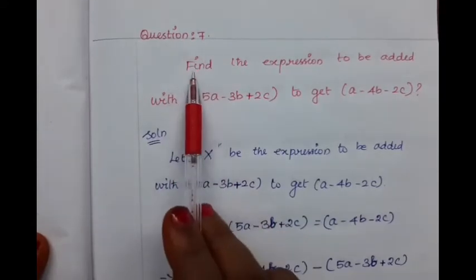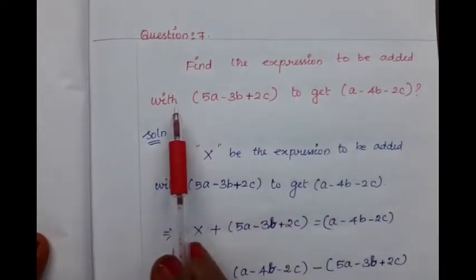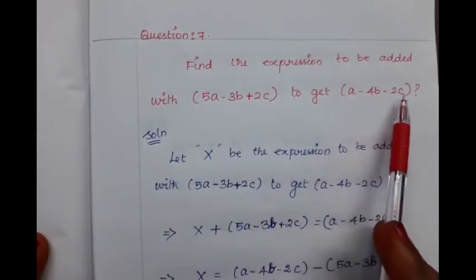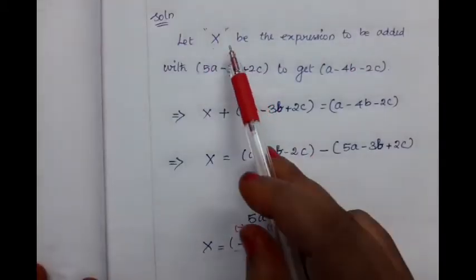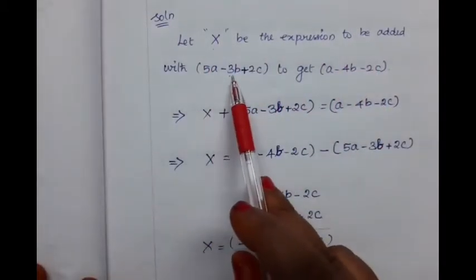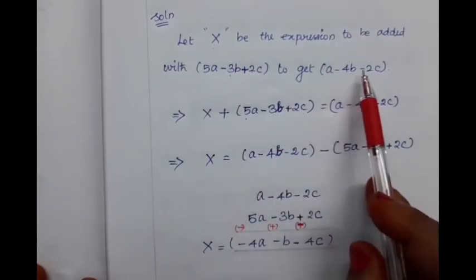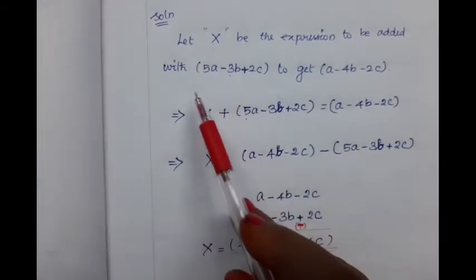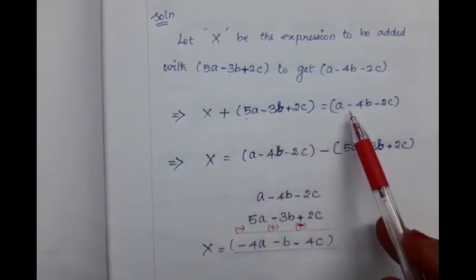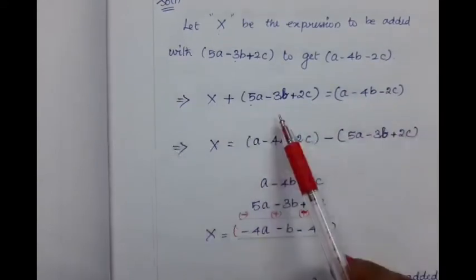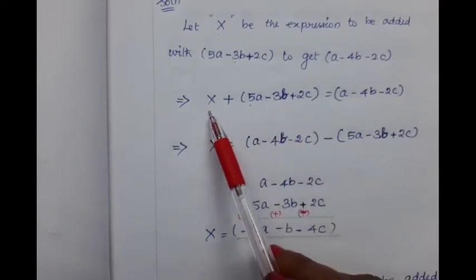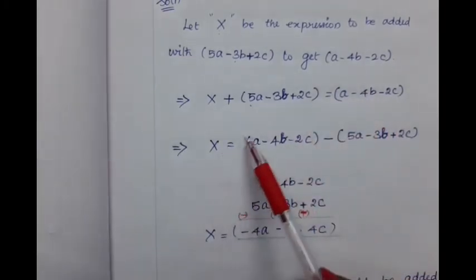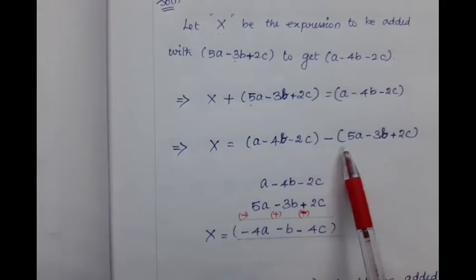Question number 7: Find the expression to be added with 5a minus 3b plus 2c to get a minus 4b minus 2c. Let us take that unknown expression as x. By the question, x is added with this expression to get a minus 4b minus 2c. For finding the value of x, we should take this expression from the left hand side to the right hand side. When we do that, it will become a subtraction.